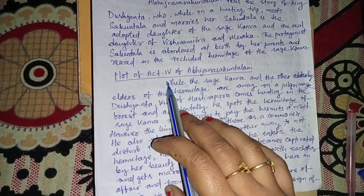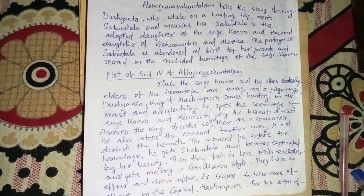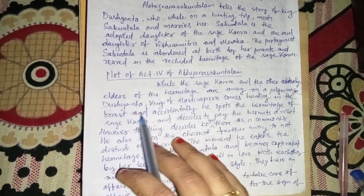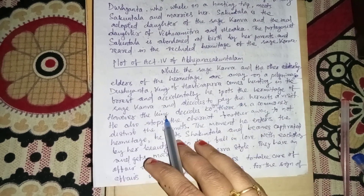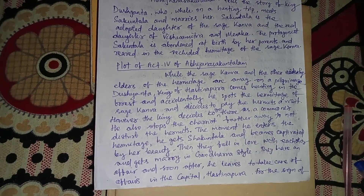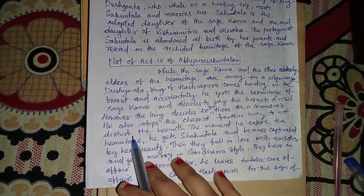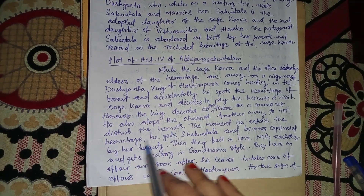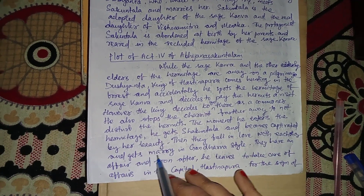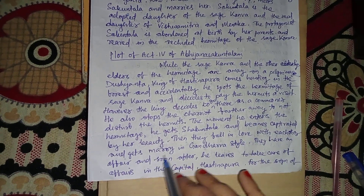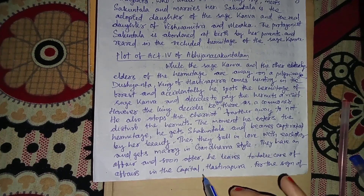This is the plot of Act 4 of Abhignaanam Sakuntala. While Sage Kanva and the other elders are away on a pilgrimage, Dushyanta, king of Hastinapur, comes hunting in the forest and accidentally spots the hermitage of Sage Kanva and decides to pay it a visit as a commoner. He stops his chariot further away so as not to disturb the hermitage. The moment he enters, he spots Sakuntala and becomes captivated by her beauty.